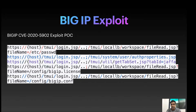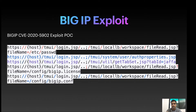Exploit codes started circulating on the internet. In the exploit code you can see: HTTPS, the target host, slash TMUI, login.jsp, then an endpoint file-read.jsp with the parameter filename equals /etc/passwd — that's the payload we read from the target server. More payloads are given for reading files like bigip.license or auth properties, which give authentication and configuration details.